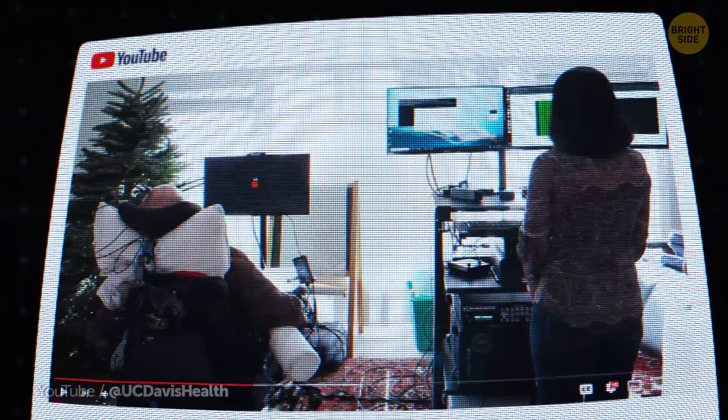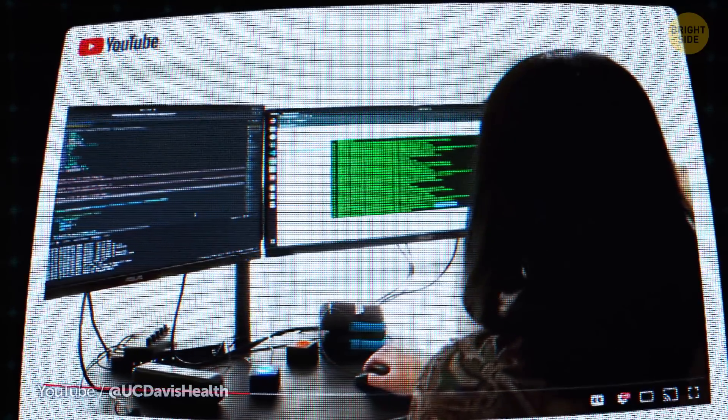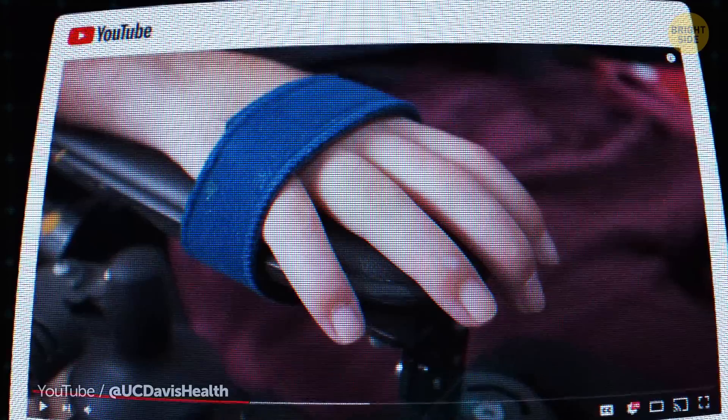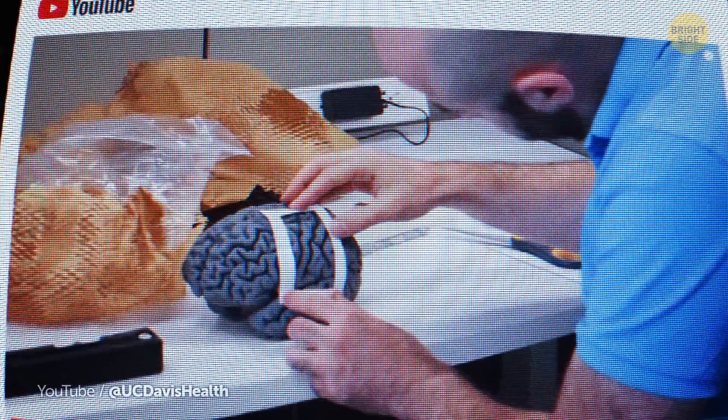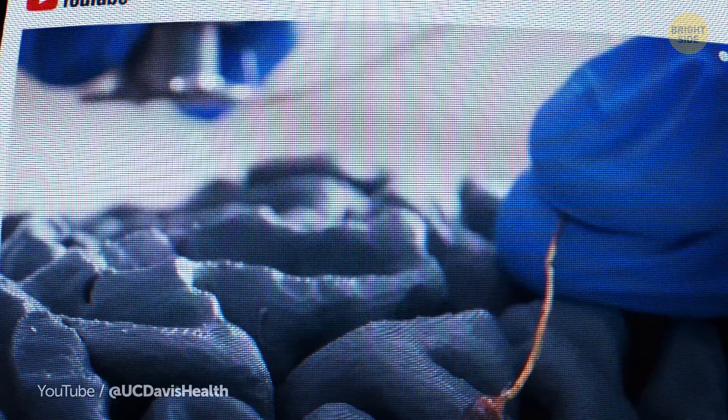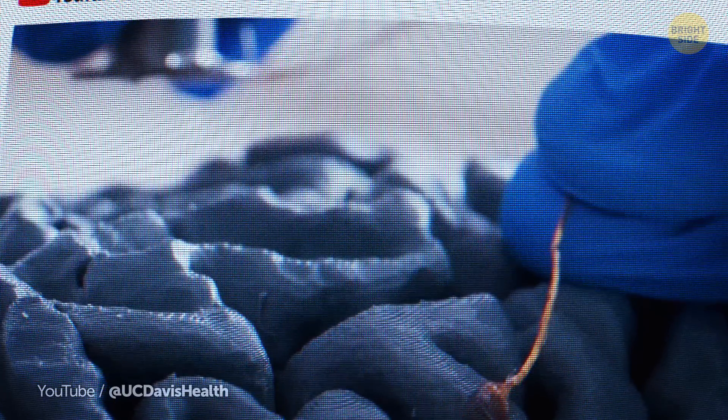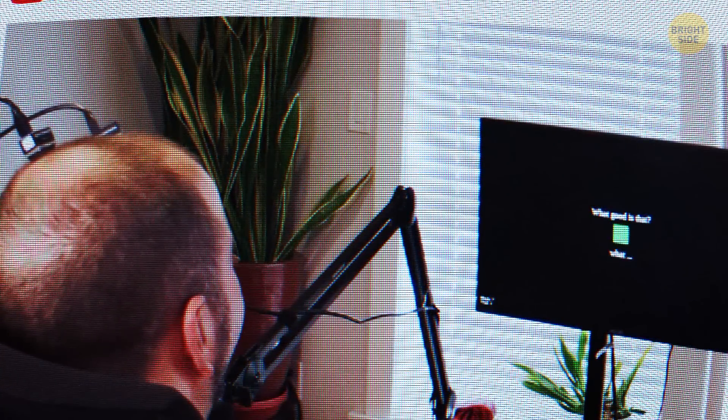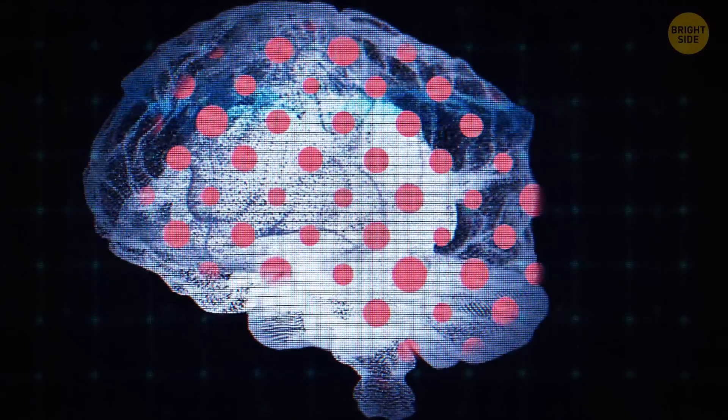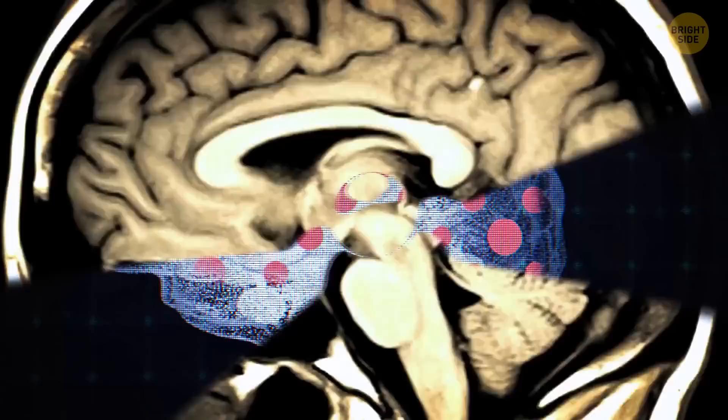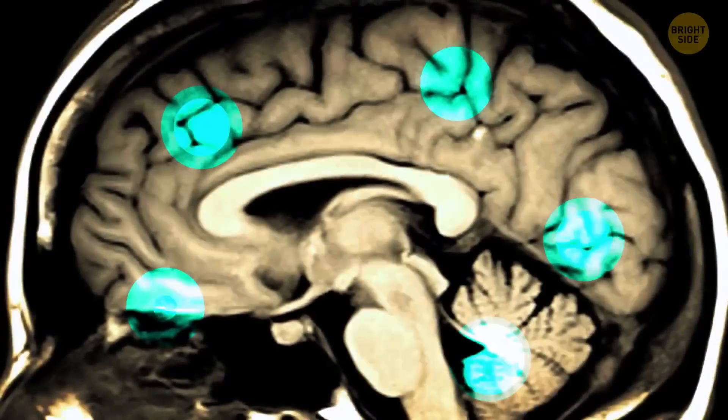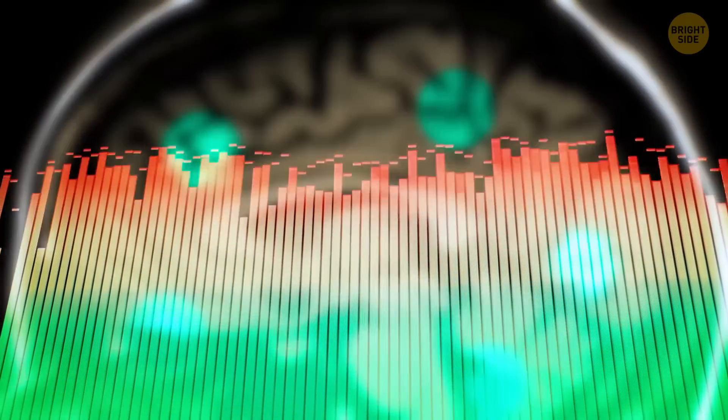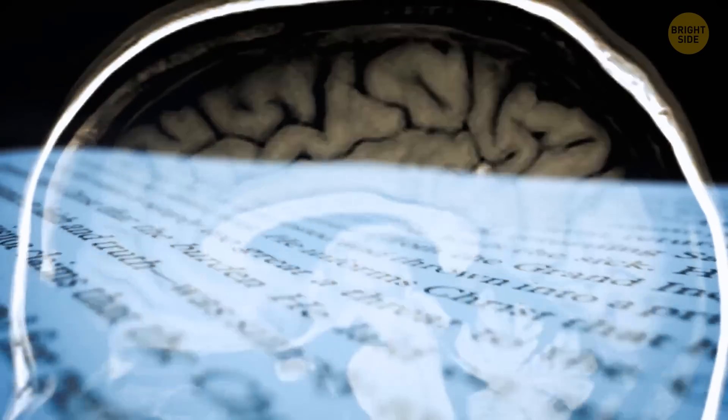To create this system, the team worked with a 45-year-old man who had a condition that made his arms and legs weak and his speech very difficult to understand, so he needed help to communicate. A doctor planted a special device into the patient's brain, placing tiny sensors in a part of the brain that helps control speech. These sensors were designed to pick up signals from 256 spots in the brain. The device detects when the brain is trying to move muscles to talk, listens to the brain's signals, and turns them into sounds like syllables, which then form the words the person is trying to say.